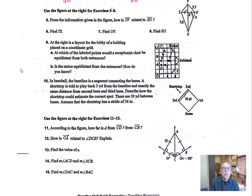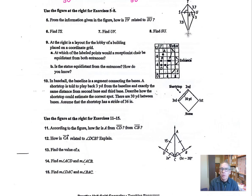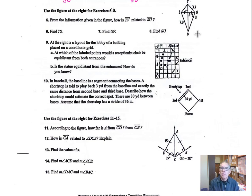Let's look at number five. How is TV related to SU? TV is the major diagonal of this kite; SU is what we call the minor diagonal. The major diagonal TV bisects perpendicularly the SU minor diagonal, so we can say that TV is a perpendicular bisector of SU.